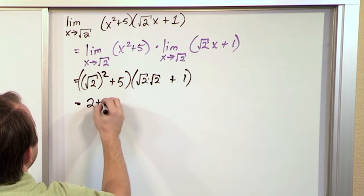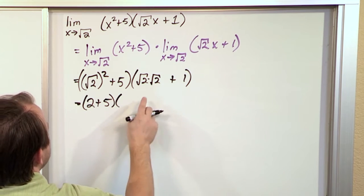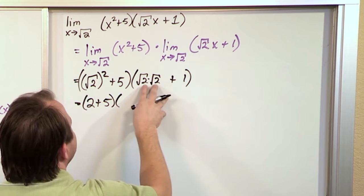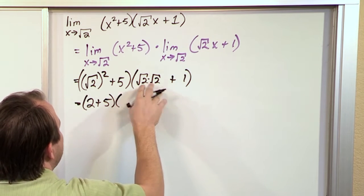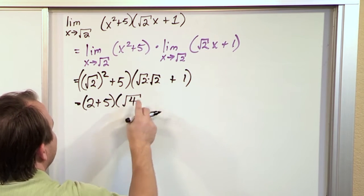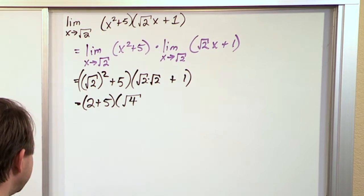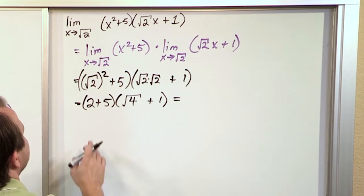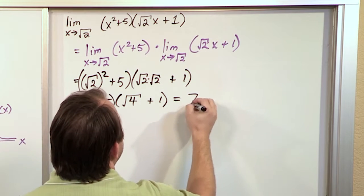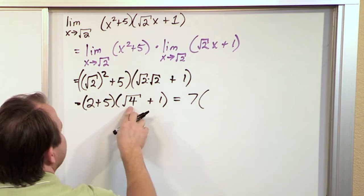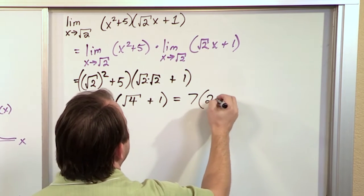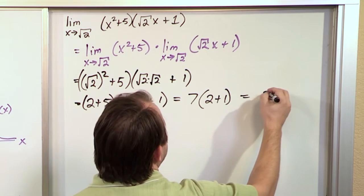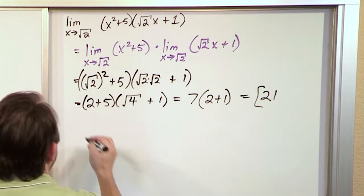So I have 2 plus 5 in the first factor. For the second factor, when you multiply two radicals you multiply the values under the radical, so square root of 2 times square root of 2 gives square root of 4, which is 2, plus 1. So it's 7 times 3, which is 21, and that's the final limit.